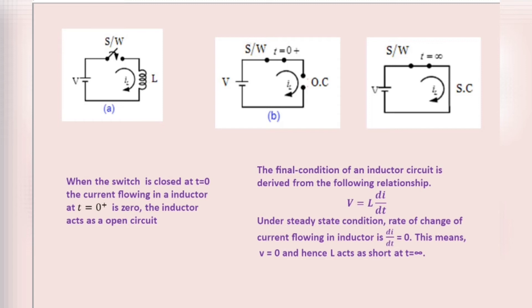At t=0⁺ the inductor acts as an open switch. At t=∞ (the final condition), the inductor acts as a short circuit. Under steady state, we provide a constant voltage, so current through the inductor is constant, meaning di/dt = 0, therefore V = 0, confirming the inductor is short-circuited. Maximum current flows through the circuit at t=∞.